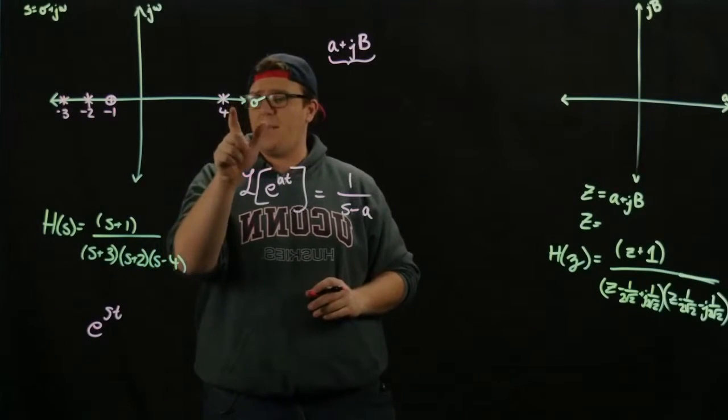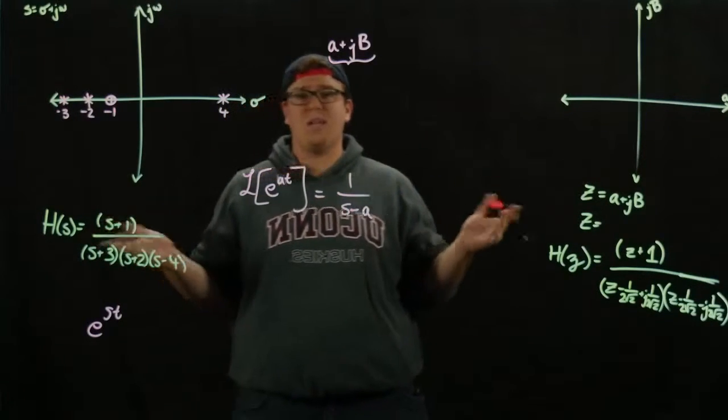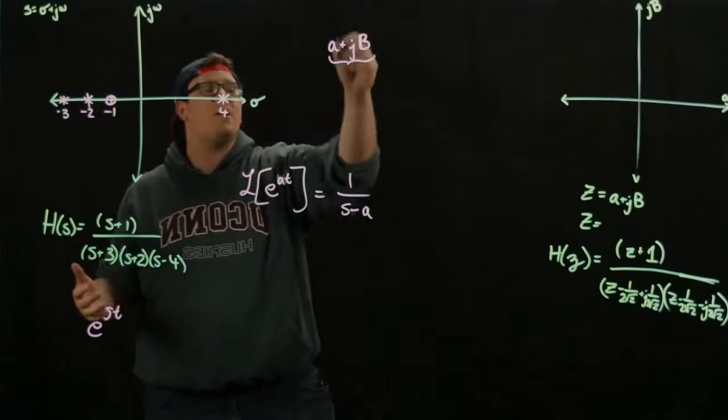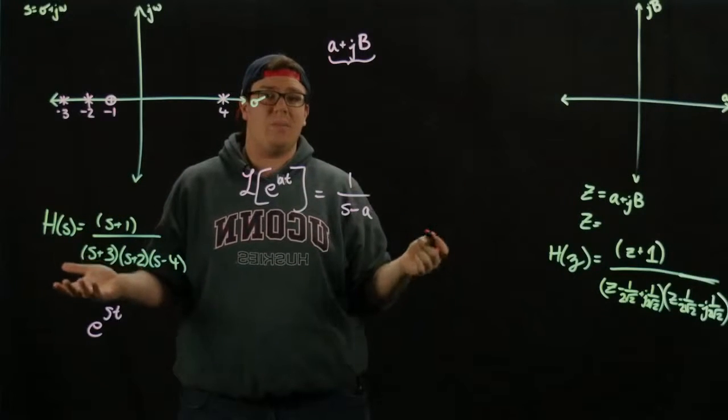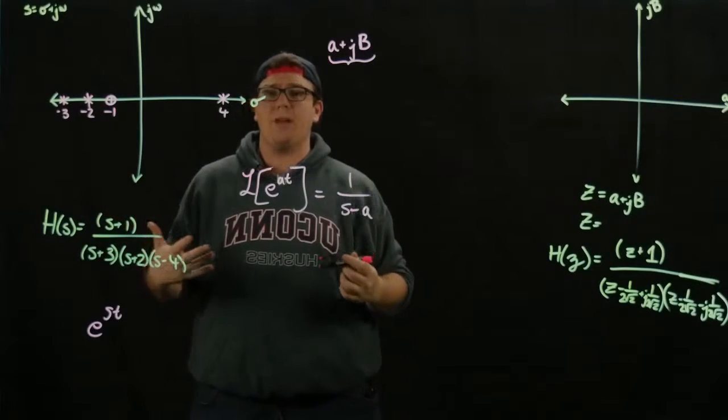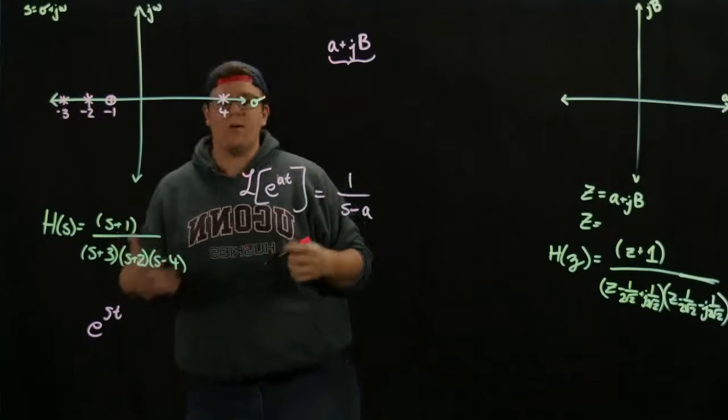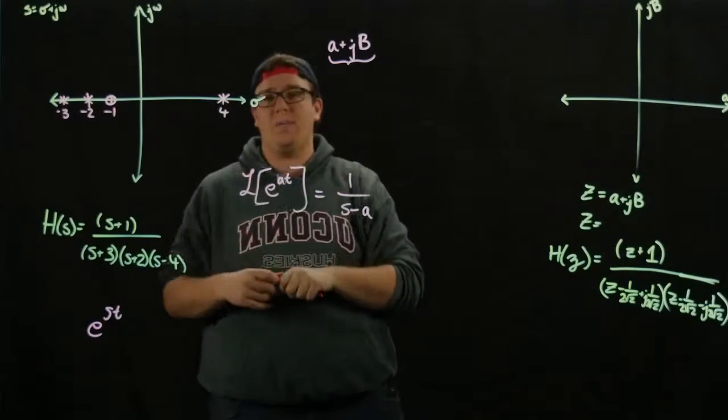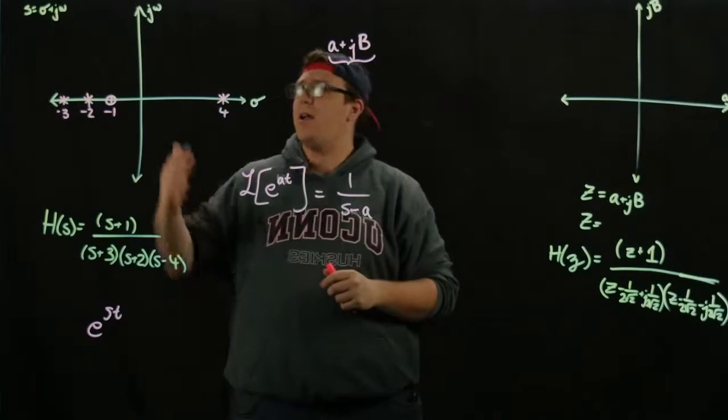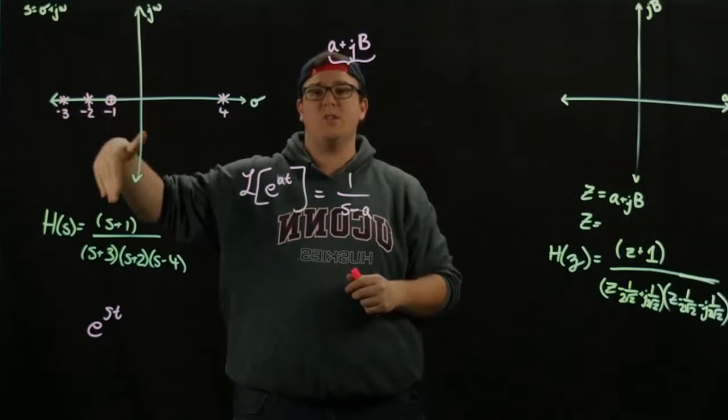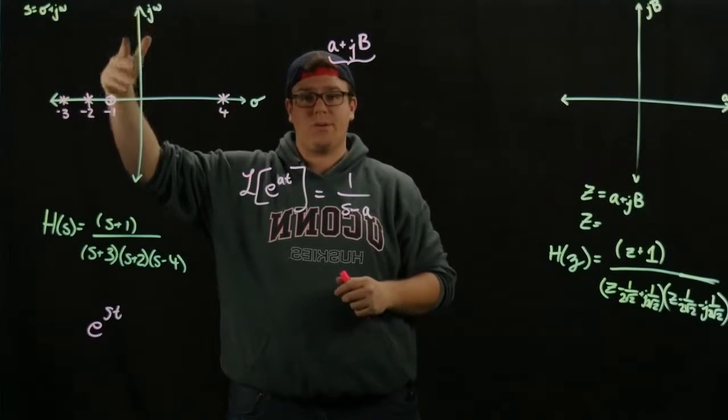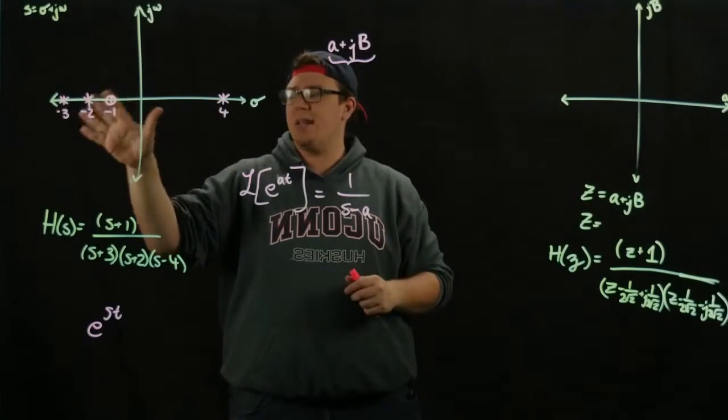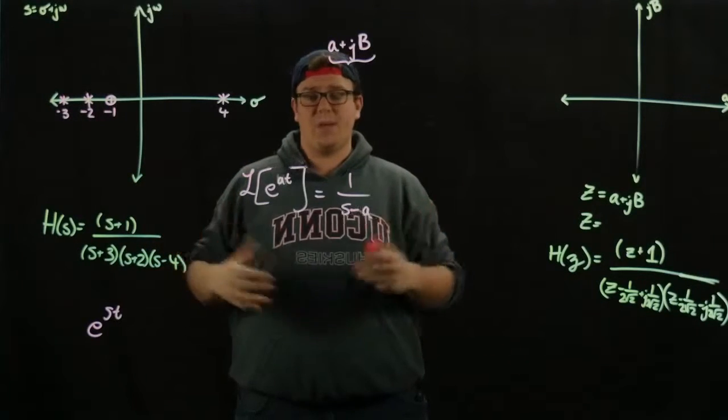If we get a positive number, we get e to the 4t, which is going to shoot off to infinity. And so the imaginary number here, if we remember, e to the imaginary number is actually just a combination of sine and cosine. So it's bounded between 1 and negative 1 in both the real and the imaginary part. So there's no reason to look at the omega axis when we're talking about stability. As long as the real part is negative, we can have stability.